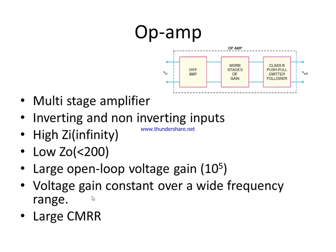The voltage gain is also constant over a wide frequency range. Similar to a CE amplifier's frequency response — where there is a constant voltage gain range from which we take the lower cutoff frequency FL and upper cutoff frequency FH, and FH minus FL is the bandwidth — in an op-amp too, if we draw the frequency response curve, the voltage gain is constant over a wide range, meaning the bandwidth will be very high.